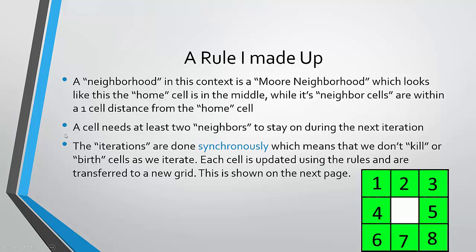So let's start a simulation with a rule that I just made up, off the top of my head. A cell needs at least two neighbors to stay on during the next iteration, or generation, whatever you want to call it. These iterations are done synchronously, which means that we don't kill or birth cells as we iterate, meaning that we do not change the grid we are working on, but rather we just transpose it onto a new grid. Each cell is updated using the rules and transferred to a new grid. This is shown on the next slide.